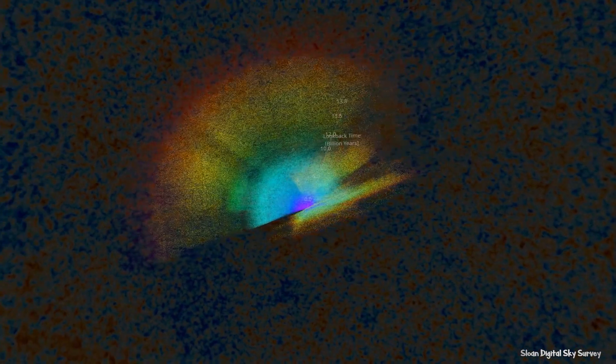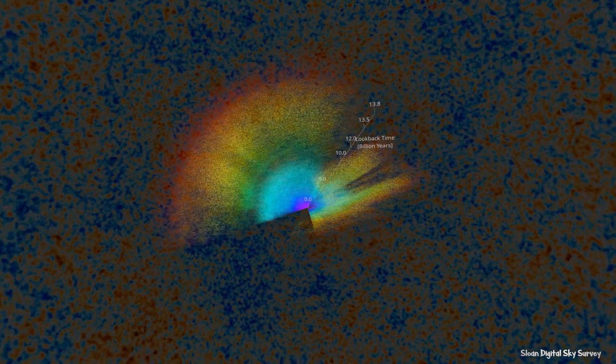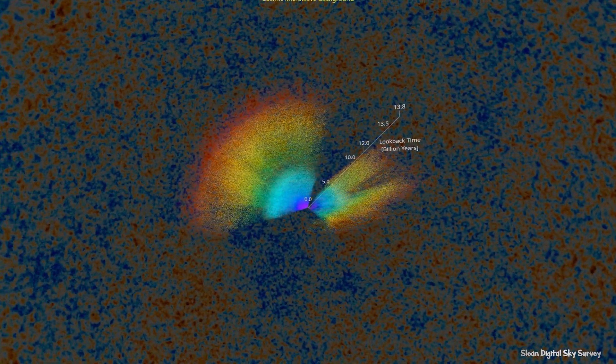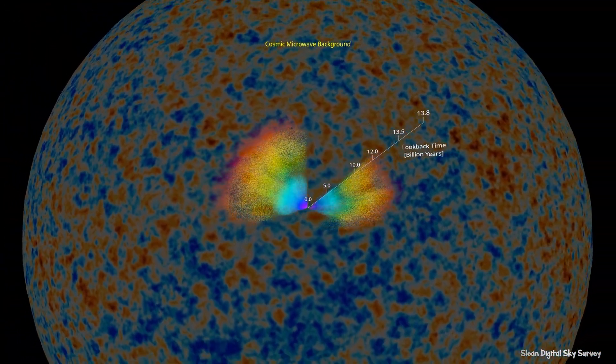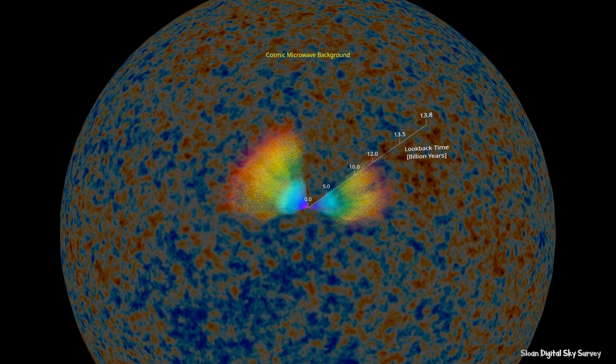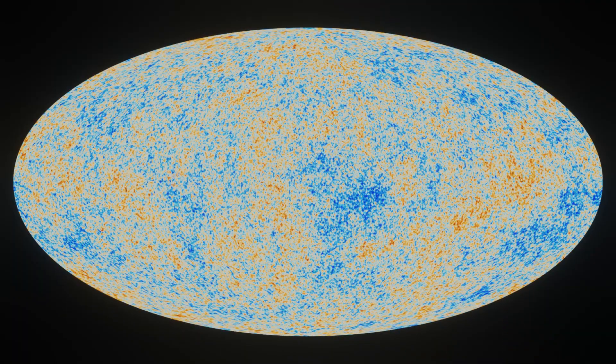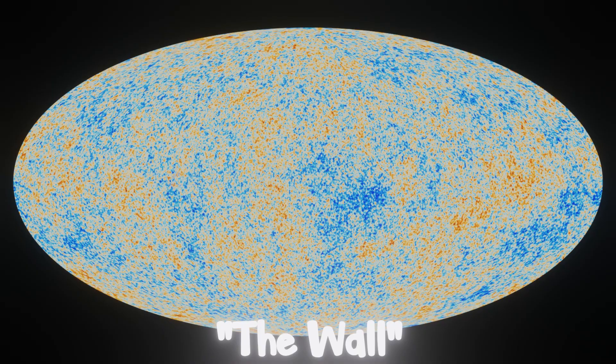So astronomers did just that. They kept looking until they couldn't look any further. Then eventually they found the same thing wherever they looked. They found the proverbial edge of the universe. It's not a very common name, but this is sometimes referred to as the wall, a phenomenon occurring no matter where you look in the night sky.